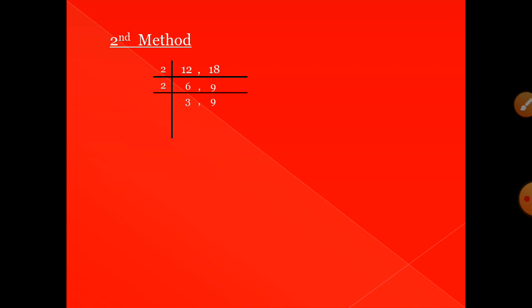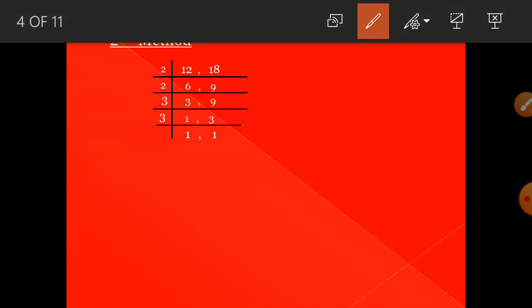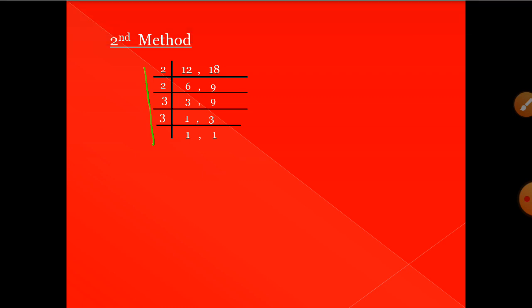Now we have 3 and 9. Both are divisible by 3 — 3 ones are 3, and 3 threes are 9. We continue until we get 1 at the last. 3 remains, so divide by 3 again — 3 ones are 3. You got 1 at the last. The LCM is equal to 2 × 2 × 3 × 3, which equals 36. Both methods gave the same factors and the same answer.